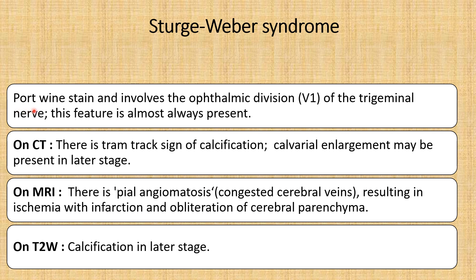In Sturge-Weber syndrome, the patient will have a port wine stain involving the ophthalmic division of the trigeminal nerve, and this feature is almost always present. If you find a unilateral port wine stain on the face, you can suspect Sturge-Weber syndrome. On CT there will be a characteristic tram-track sign of calcification, and calvarial enlargement may be present later. On MRI there is pial angiomatosis with congested cerebral veins resulting in ischemia with infarction and obliteration of cerebral parenchyma, and on T2 MRI calcification in later stages can be seen.